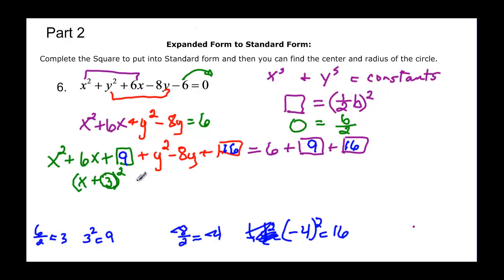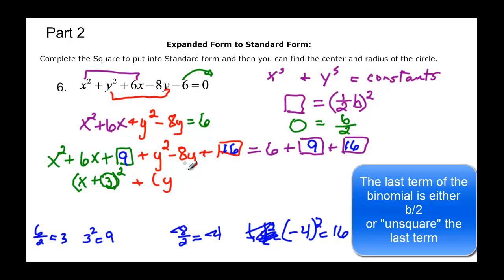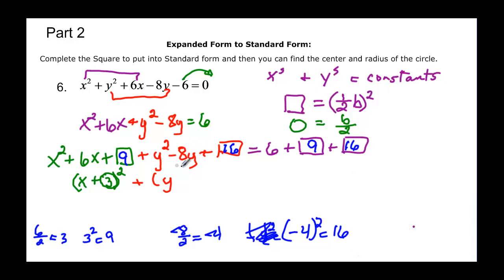And then we do the same thing with the y's. Well I unsquared the y squared and it's just y. And I either take half of the 8 to know what I'm going to add or unsquared the 16. But it's better to take half of the negative 8 so you get the right sign. So half of the negative 8 is minus 4. And then we're going to square that. And then we just add all this up. 15 plus 16 is going to be equal to 31.